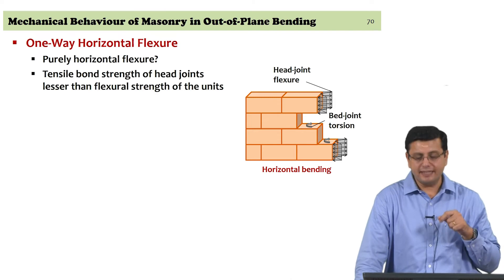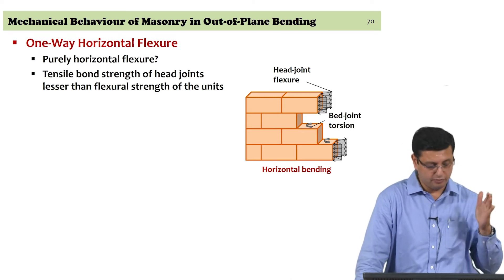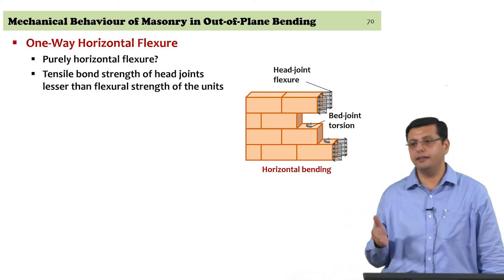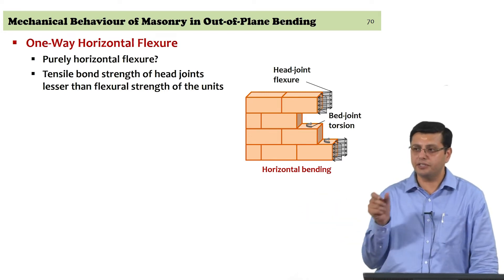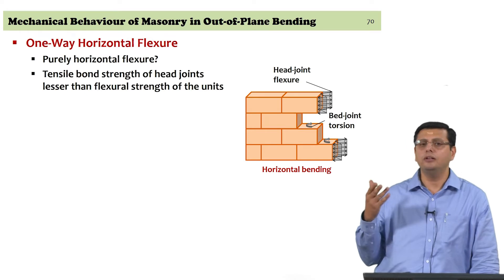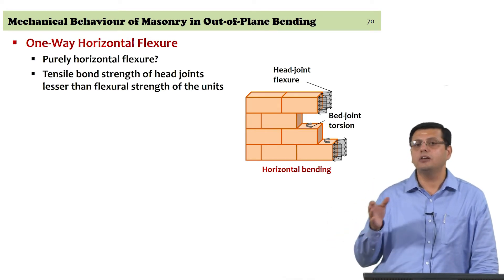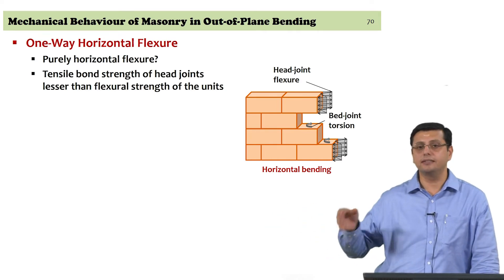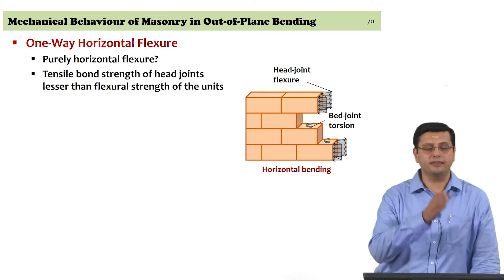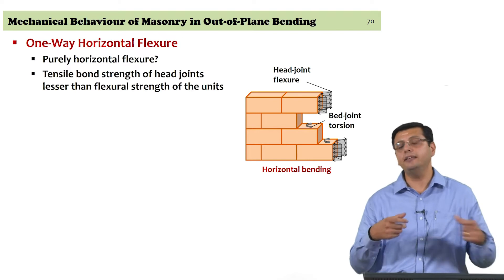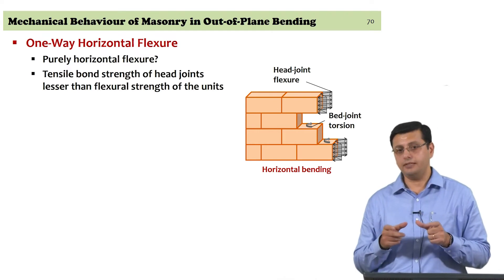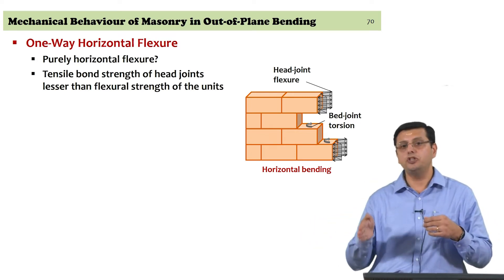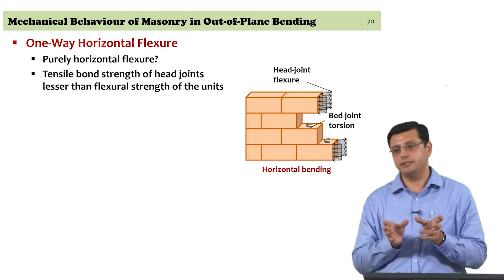The tensile strength of the bond at the head joint itself is typically the weakest link in a masonry wall, primarily because there is no consolidation of the head joint — otherwise referred to as the perpen joint. This is often neglected in calculations, or if considered, it will be lesser than most other strengths in the masonry wall. The tensile bond strength at the head joint is lower than the flexural tensile strength of the unit.